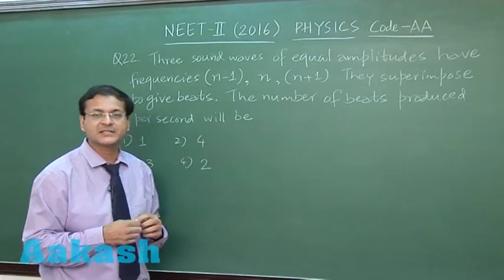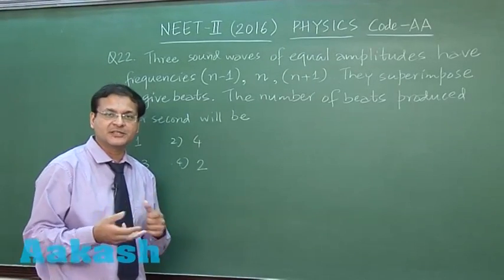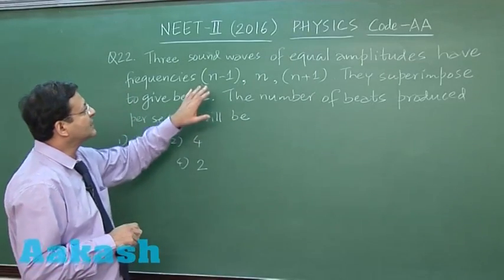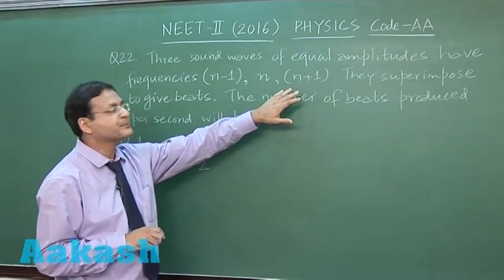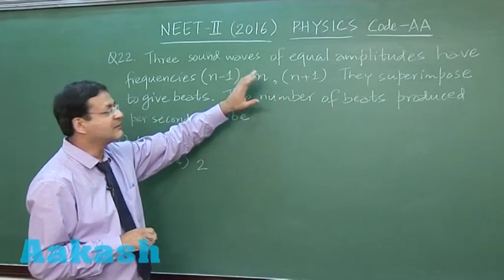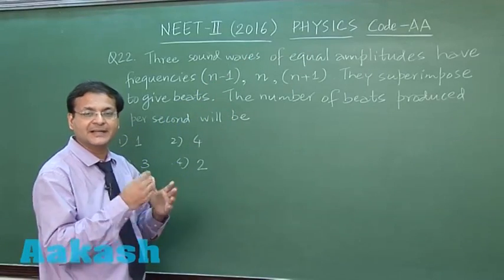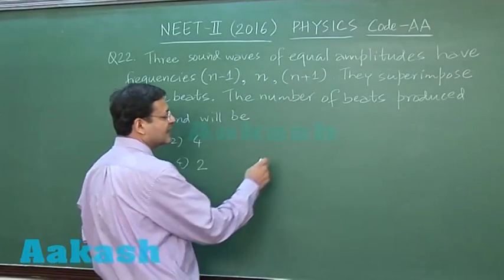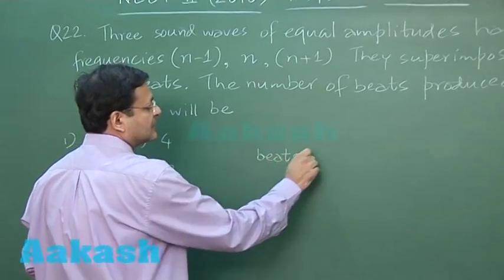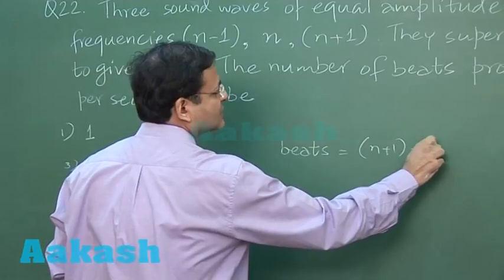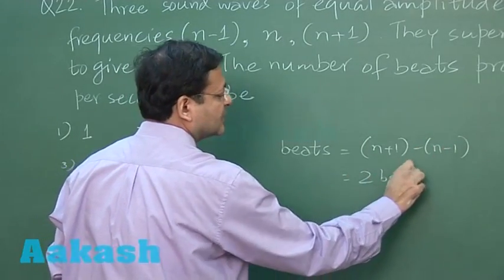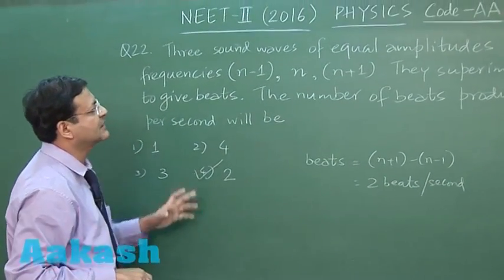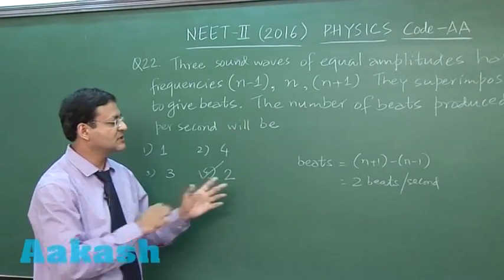Whenever you have 2 different sources and you sound them together, the average of both frequencies will be heard and the number of beats per second is the difference of the extreme values. Here the extreme values are n-1 and n+1. If you take the average, that will become n, so it will be superimposed with n. The wavering, which you call number of beats per second, is the difference of the extreme values. So beats per second will be the difference of these two: (n+1) - (n-1). This is 2 beats per second you will be hearing. This will be the correct answer mark for this question.